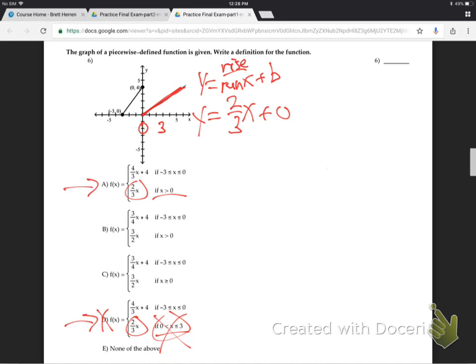The X stuff to the right is telling you where it does whatever it does. Is that good? So it can't be D because D's saying I do the Y equals two-thirds X only between zero and three. That's not true. He does the two-thirds X thing between zero and onward, right? So it's not D. We already know it's not B or C because they have three-halves X. That is not going up three over two. It's not three-halves X, right?